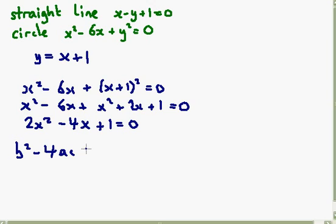So b squared, so that's minus 4 squared, so that's 16, and we've got 4 times 2 times 1 is 8, so minus 8. So 16 take away 8 is 8, which is greater than 0. So in this case, we can quite clearly see that there must be two intersection points between x minus y plus 1 equals 0, and x squared minus 6x plus y squared equals 0.